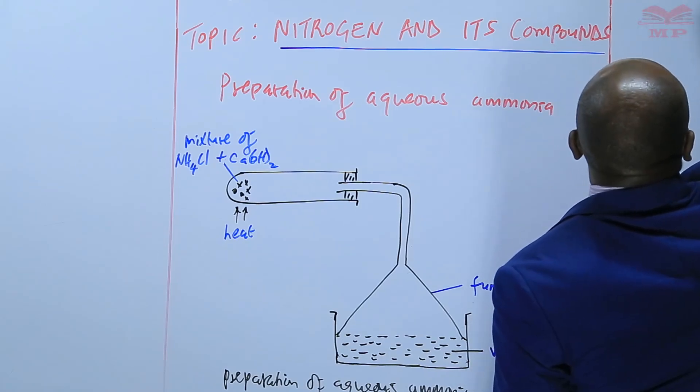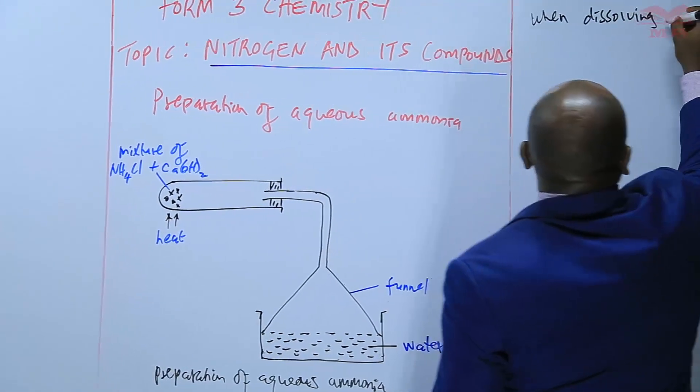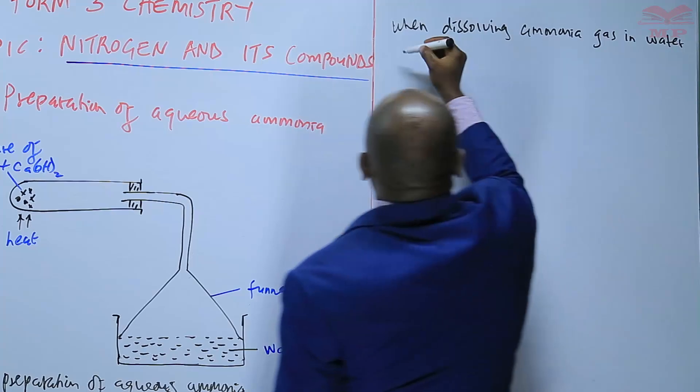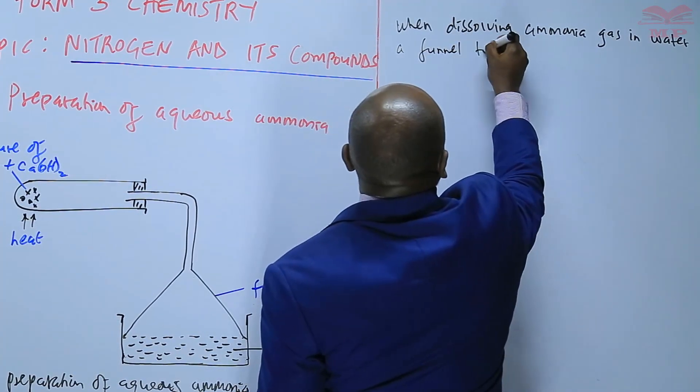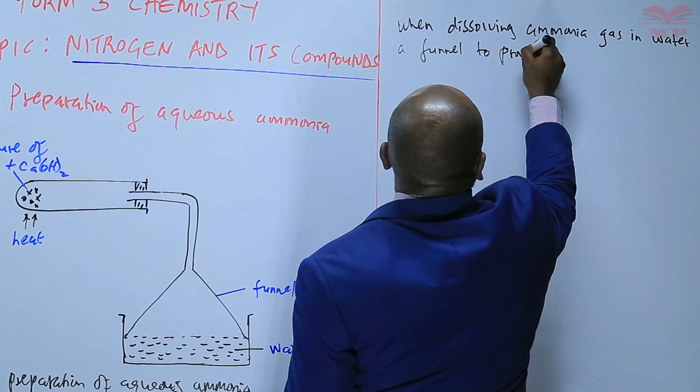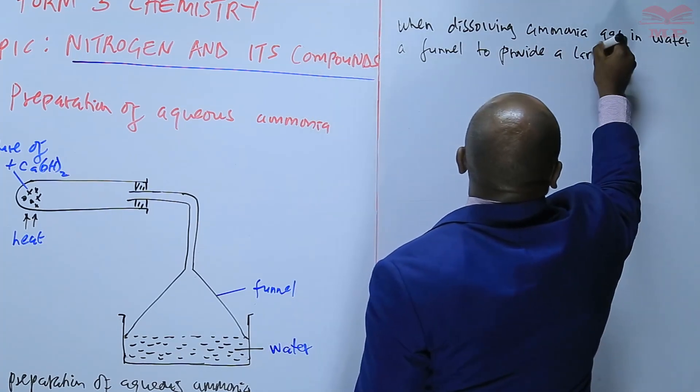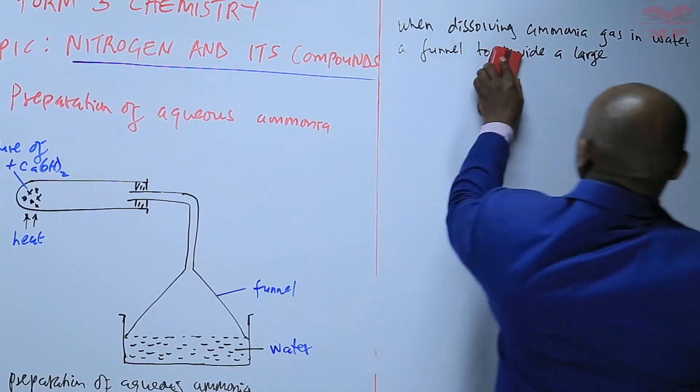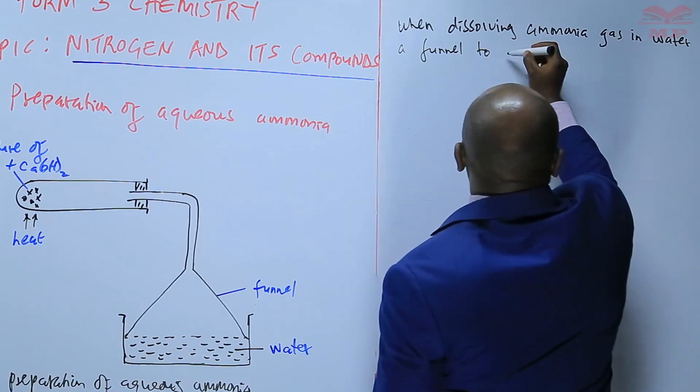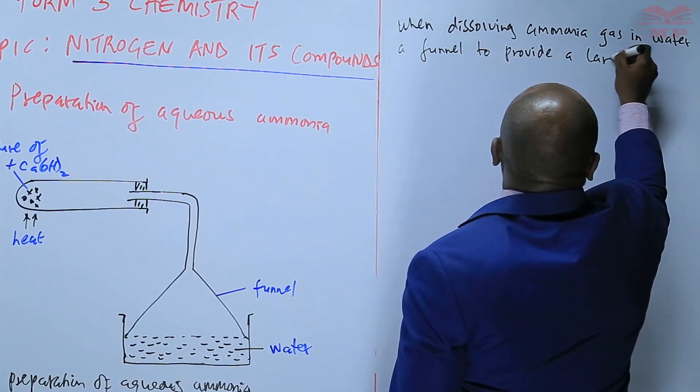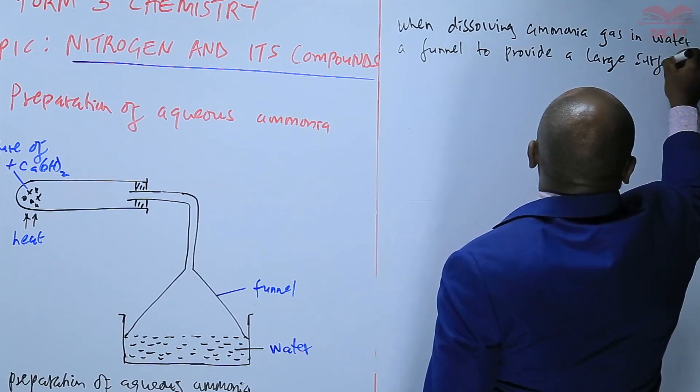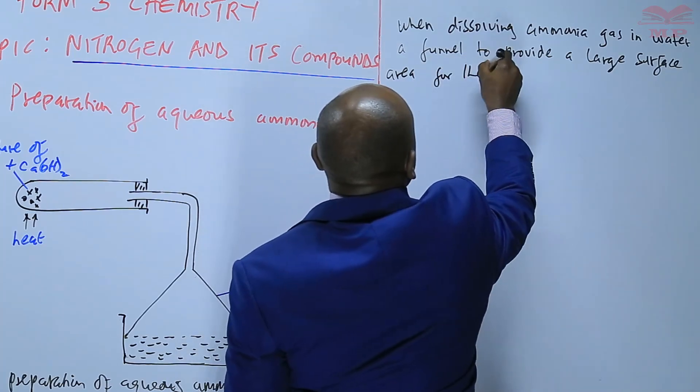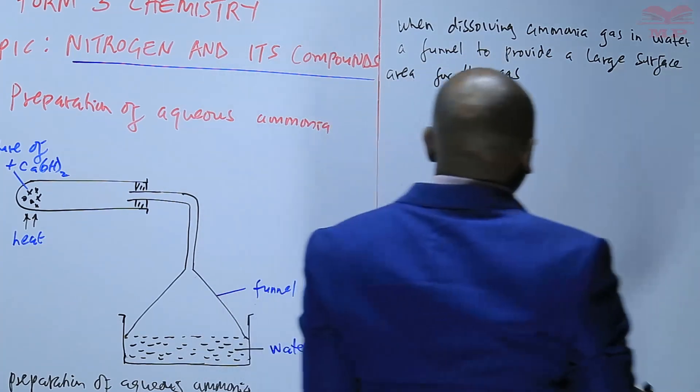So when dissolving ammonia gas in water, a funnel is used to provide a large surface area for the gas to dissolve.